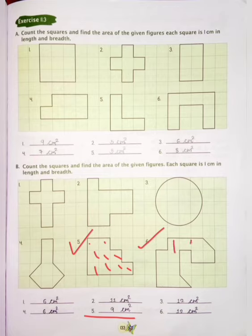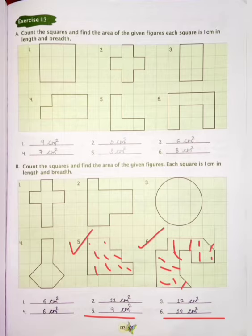Now number 6 — counting 1, 2, 3, 4, 5, 6, 7, 8, 9, 10, 11. Then half and here half, so total 12. So our answer is 12 square centimetres.